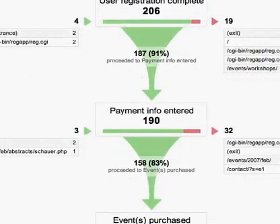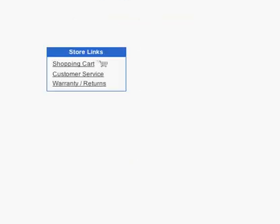Site overlay allows you to view click and conversion information superimposed on every link as you surf through your site. It's an intuitive way to gain insights into how design and layout on your site affect your bottom line.